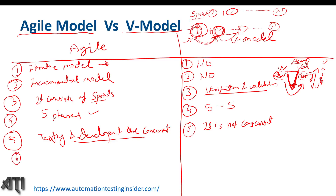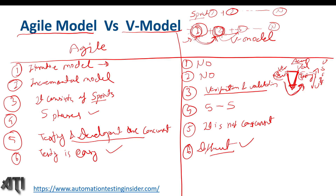The sixth difference: testing is easy in agile methodology and a little bit difficult in V model. It is easy in agile because we keep interacting with the development team, the BA team, and the customers — we are in proper sync with the sprint cycle. In V model it is difficult because it takes a lot of documentation, it is time-consuming, and until the product is developed we cannot start the testing phase. There is less communication compared to agile, which is why testing is difficult in V model.